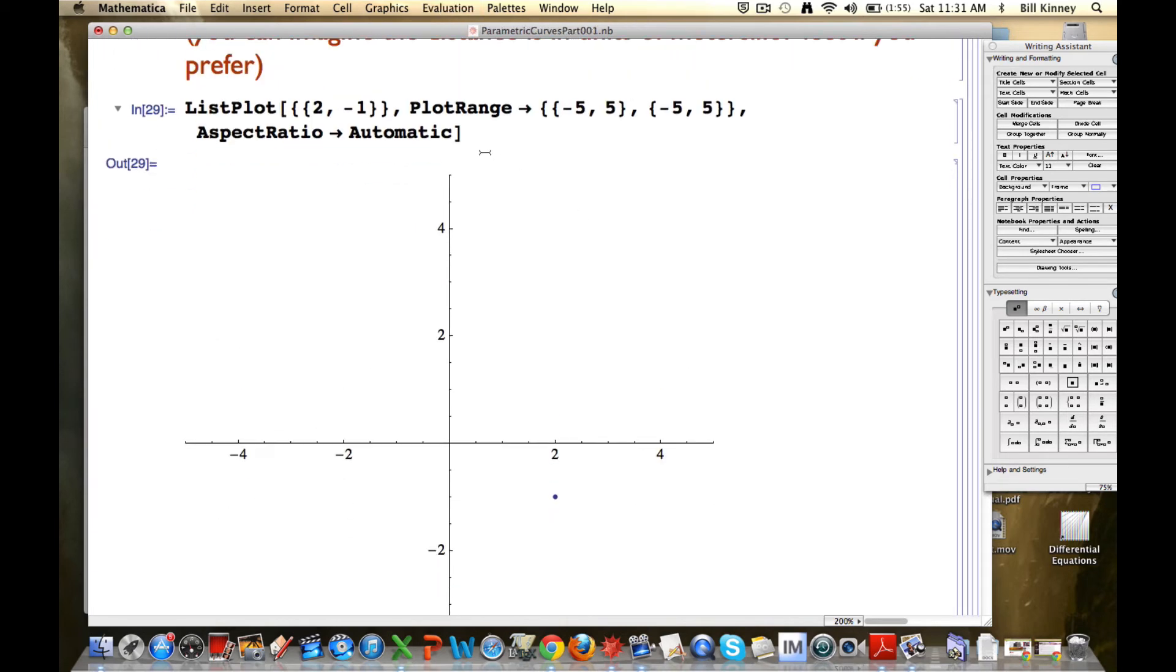You can also label the axes. I'll do that quick with another option called AxesLabel, arrow. And then, let's see, you put curly braces. If I put x in quotes, comma, y in quotes, that's going to label the axes with text. X and a y. There we go. An x and a y.